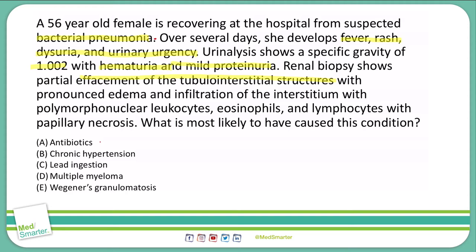Chronic hypertension probably won't cause an acute onset of all of this. Lead ingestion is more of a chronic problem, not going to immediately pop up while this patient's in the hospital, so I'm marking that out. Multiple myeloma — while we can see eosinophilic casts and other giant cells associated with it, we're not going to see this type of presentation. Wegener's granulomatosis, while it can cause renal damage, this is a focal segmental glomerulonephritis — not an acute picture. This seems to be more of an acute interstitial nephritis, so I'm taking E out.